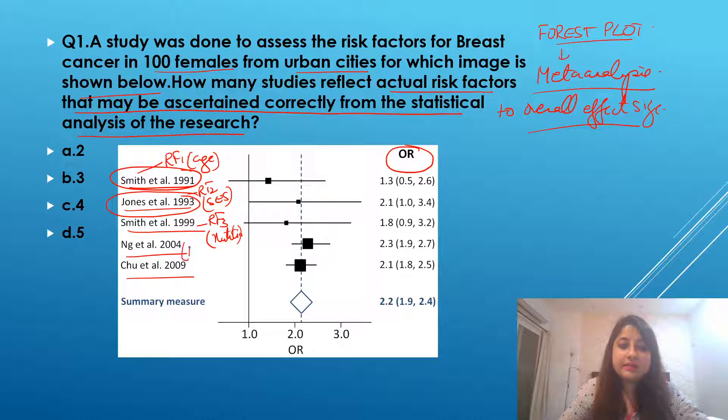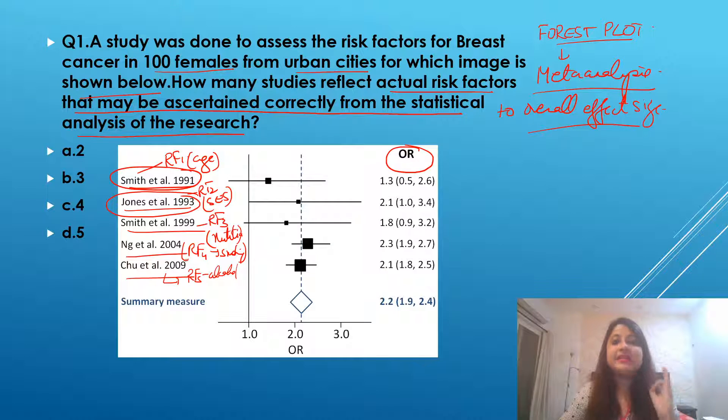And for this, NG et al. talks about risk factor 4, which could be smoking. And Chu et al. talks about risk factor 5, which could be alcohol. Now, I have to find out. I have been asked the question that how many studies out of these 5 studies reflect actual risk factors which show a statistically significant association with breast cancer.